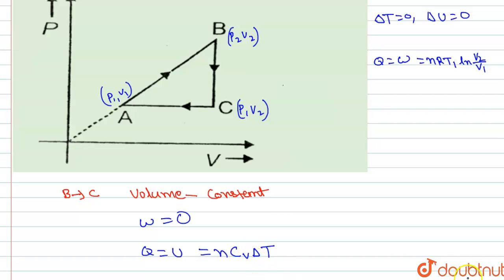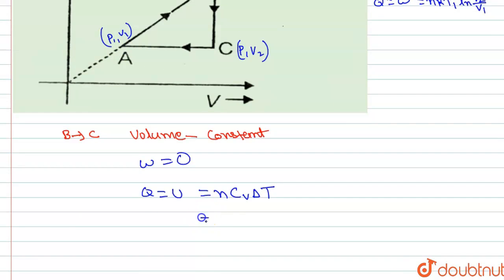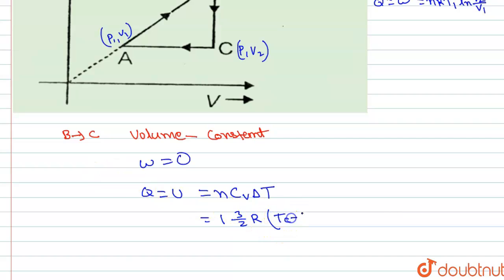We can consider this as one mole. For a monoatomic gas, CV = 3/2 R. So we can put here 3/2 · R · ΔT. ΔT for the B-C process means T_C minus T_B.